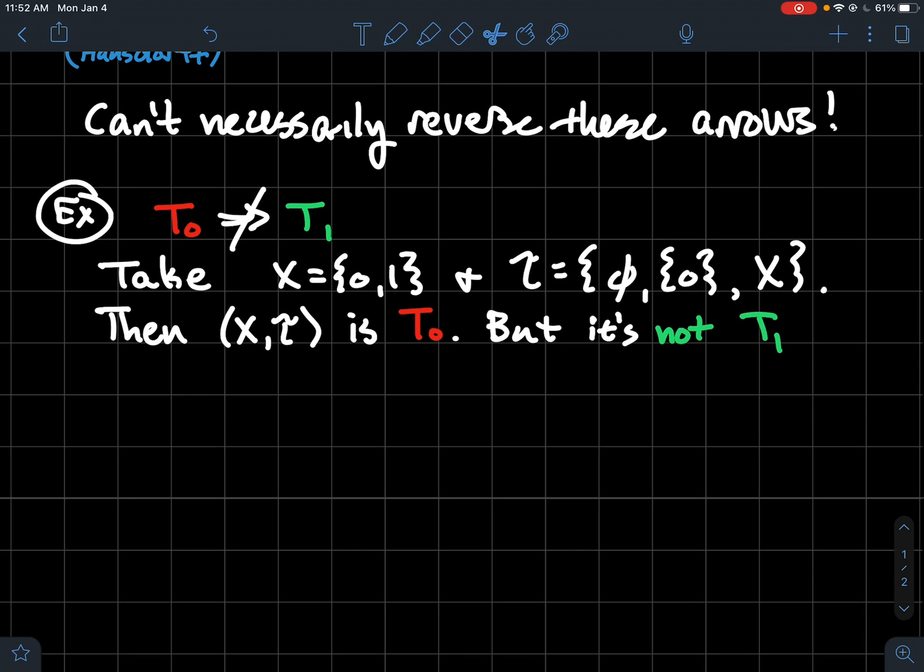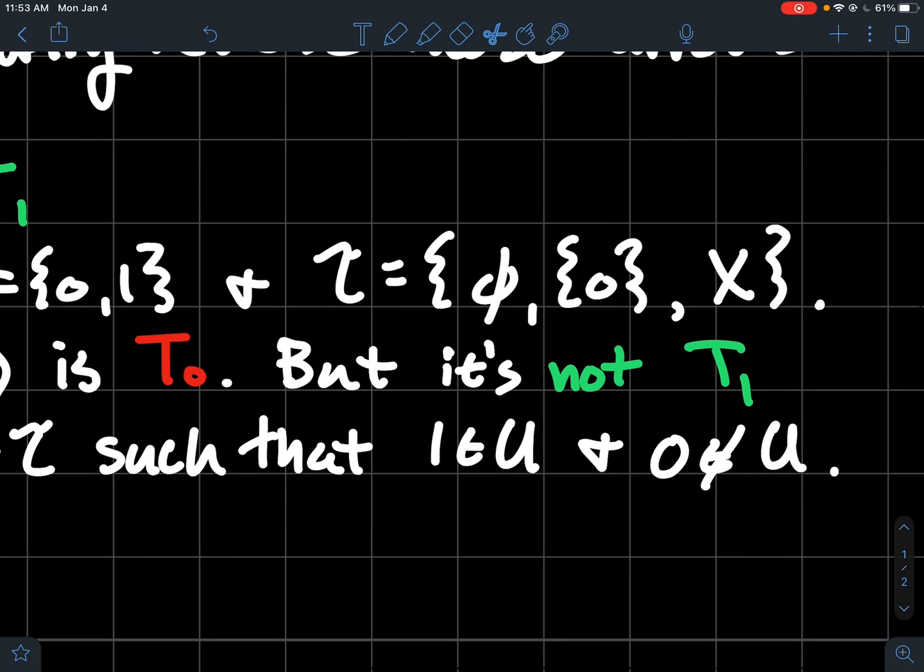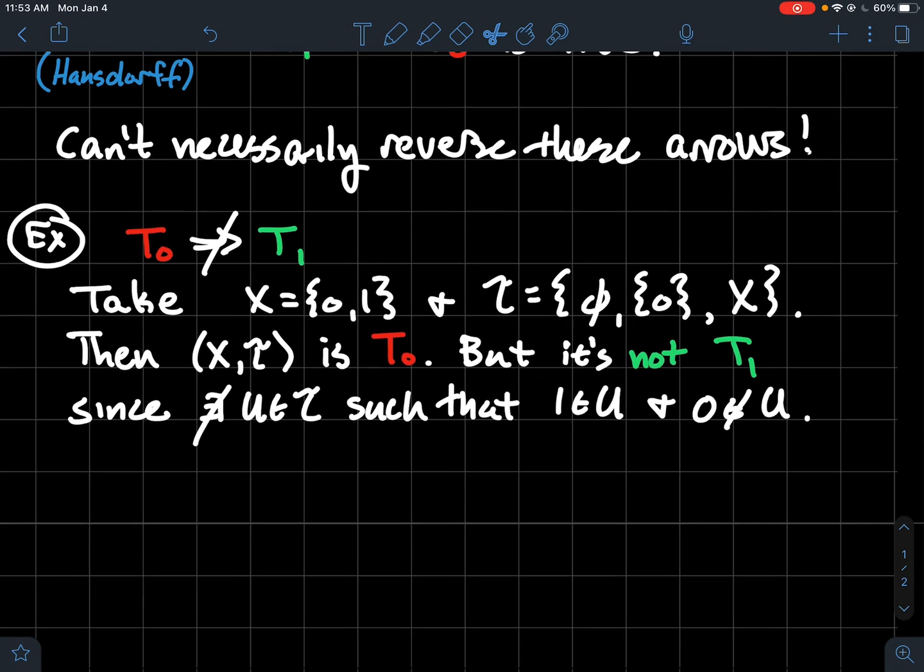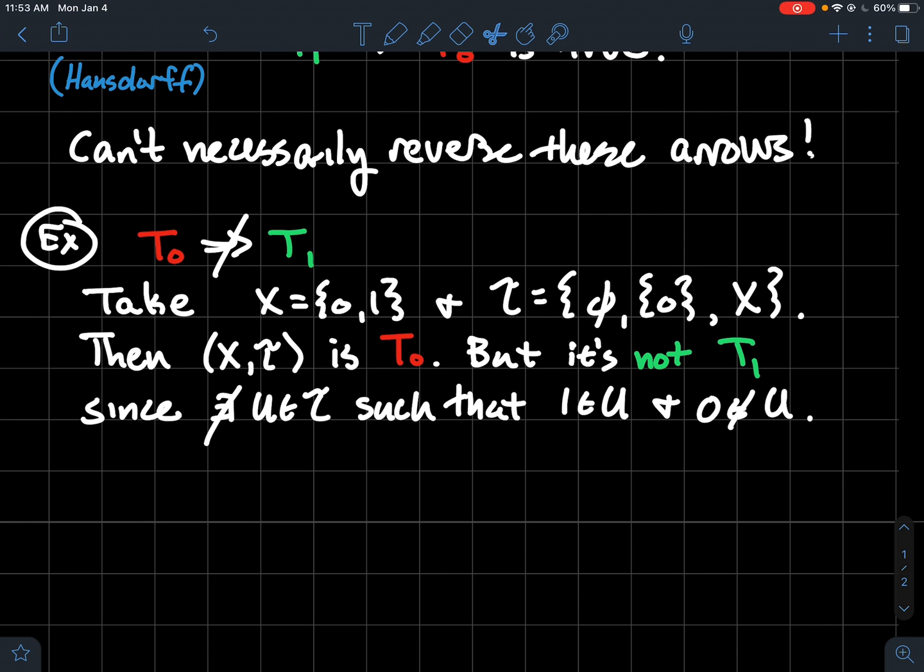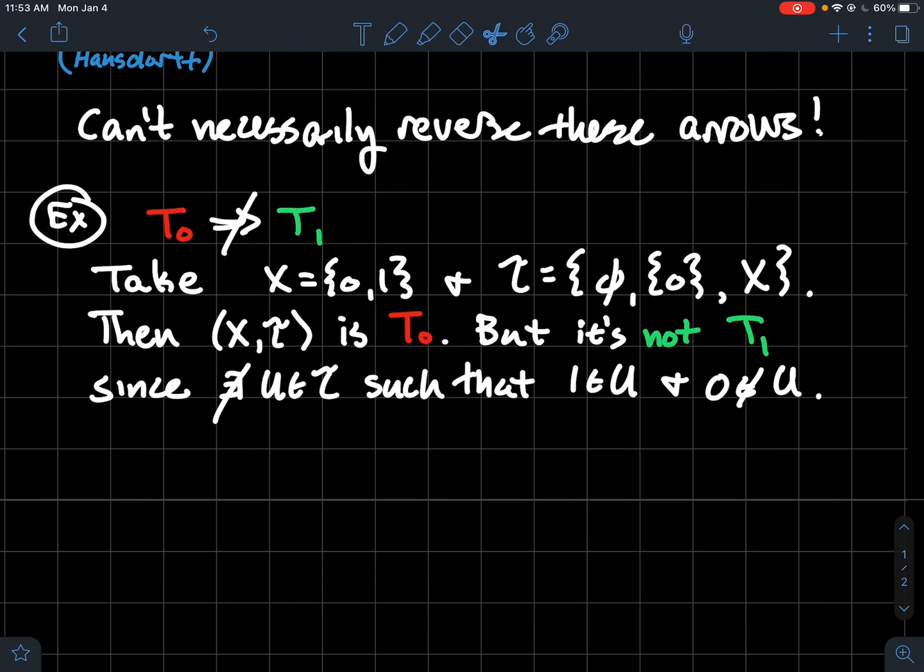But it's not T1. And so why is it not T1? Remember, for T1, we require that the other point also should have its own neighborhood that misses the other point. So to say that a little bit less confusingly, this is bad because 1 does not have a neighborhood that misses 0. If you look at T, the only open set that contains 1 is the whole set X itself. So it's not possible for 1 to have a neighborhood that misses 0. So therefore, the Sierpinski space is not T1.